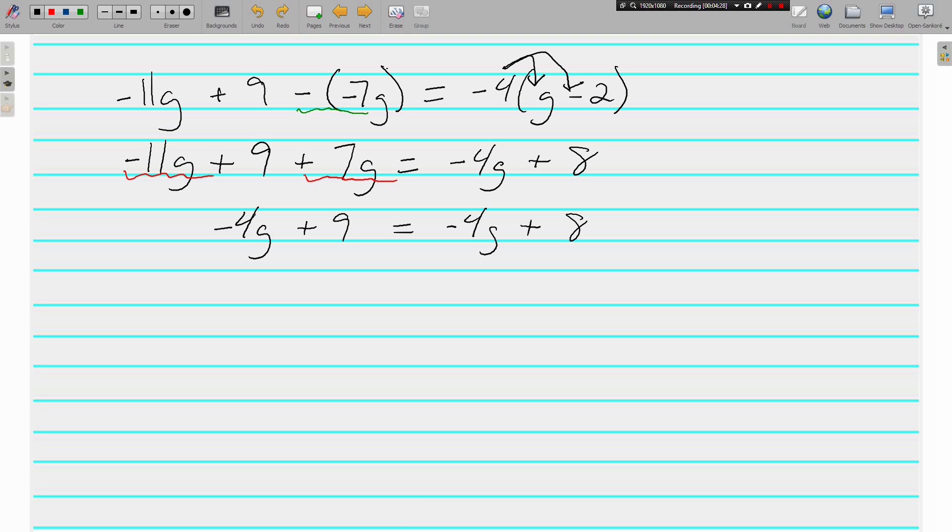All right, we get our variables together first. Add 4g to both sides, and again our g's have canceled. We added 4g to both sides. All the g's went away, but this time we are left with something that is not true. 9 equals 8. No, it does not. 9 does not equal 8.